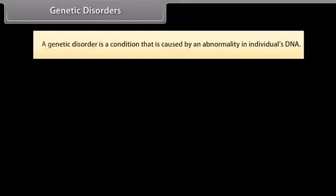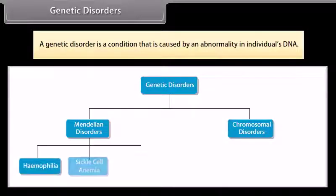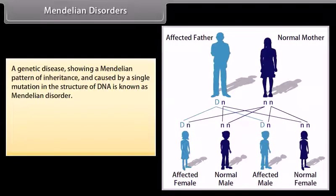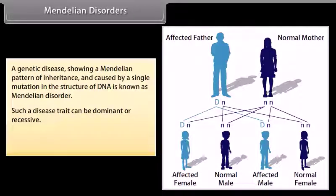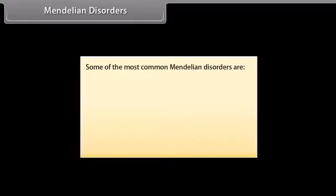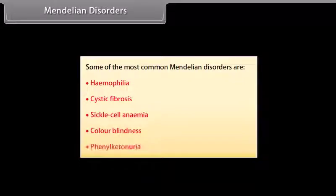A genetic disorder is a condition caused by an abnormality in an individual's DNA. A Mendelian disorder is a genetic disease showing a Mendelian pattern of inheritance and caused by a single mutation in the structure of DNA. Such a disease trait can be dominant or recessive, and pedigree analysis can be used to determine the transmission of such traits. Some of the most common Mendelian disorders are haemophilia, cystic fibrosis, sickle cell anemia, color blindness, and phenylketonuria.